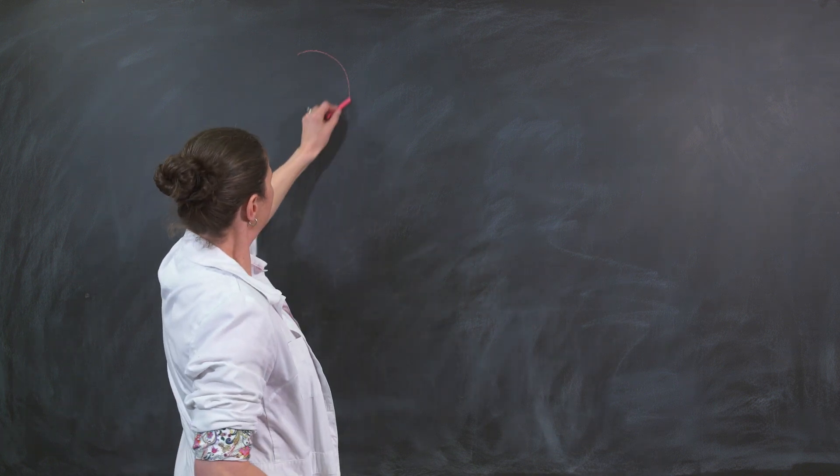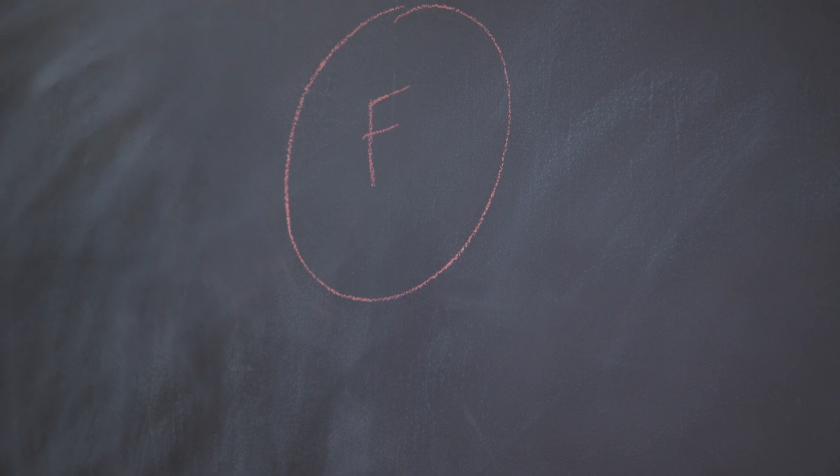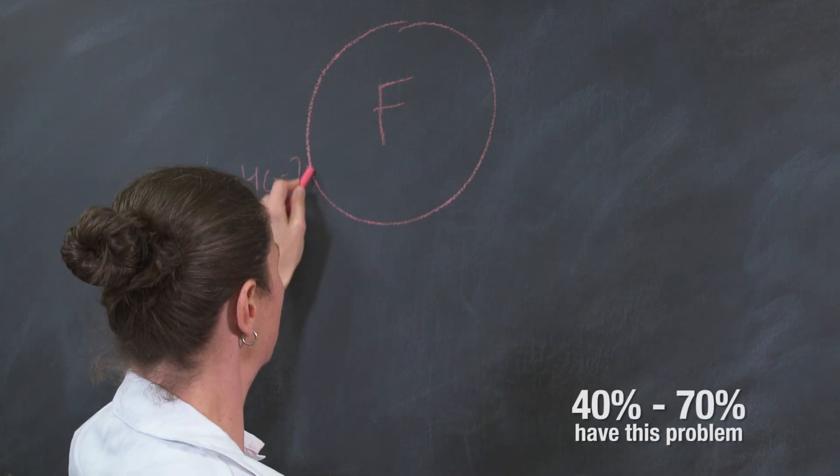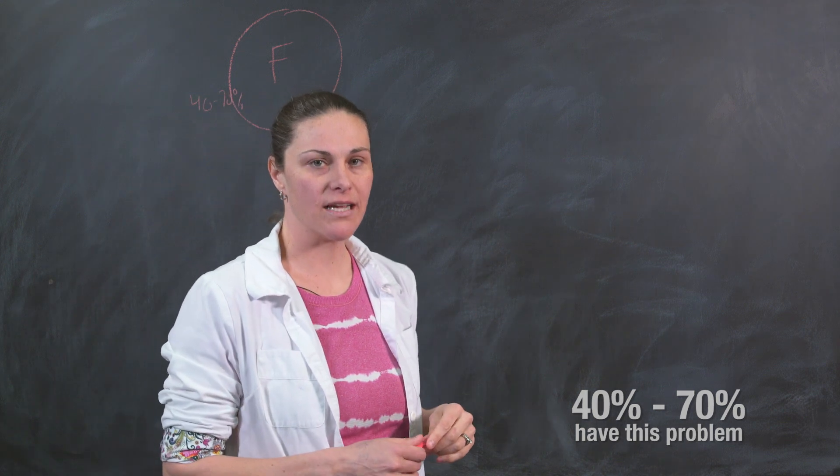So this is the folate wheel. This cycle produces all the cells in the body. 40 to 70 percent of children with the diagnosis have a problem with this pink wheel, the way that the folate cycle is spinning.